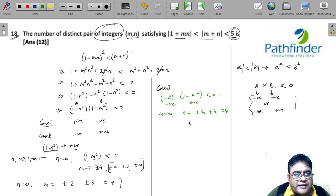There are 6 solutions when m is 0, and 6 solutions when n is 0. The total number of integer solutions is 12, and that is your answer.